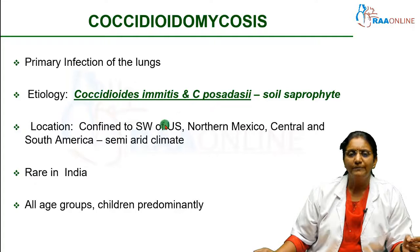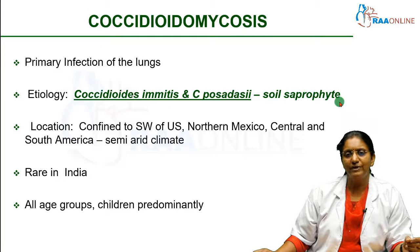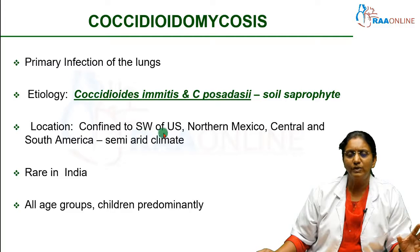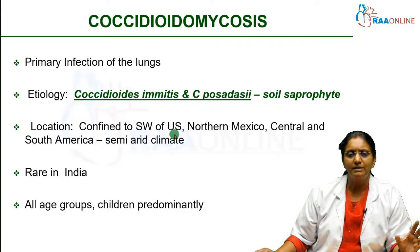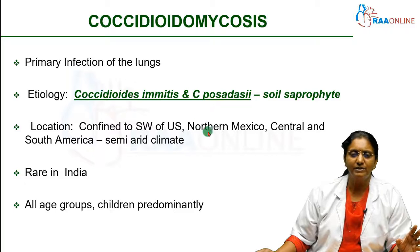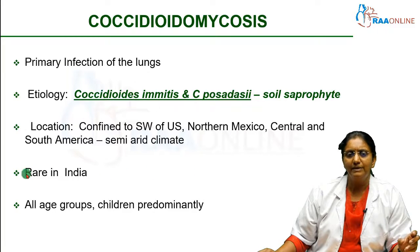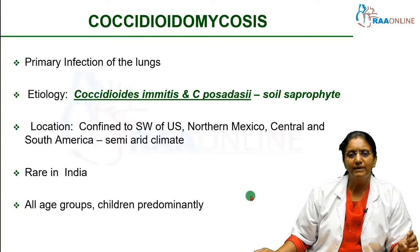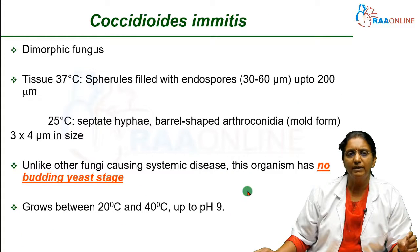C. imitis is more common. This organism is a soil saprophyte and this disease is confined to the southwestern states of the United States, northern Mexico, and central and South America — areas with a semi-arid, dry desert-like climate. It is rare in India, and all age groups can get affected but children are predominantly affected.